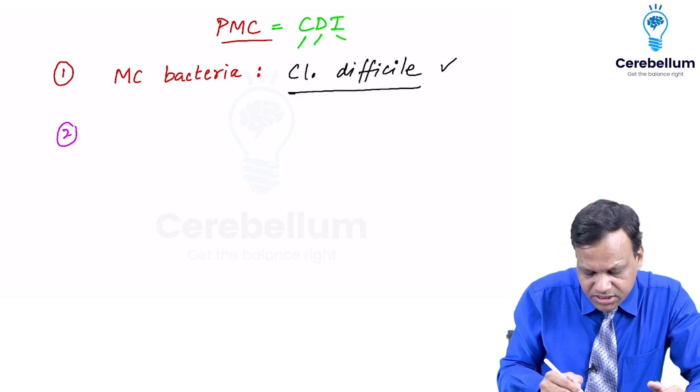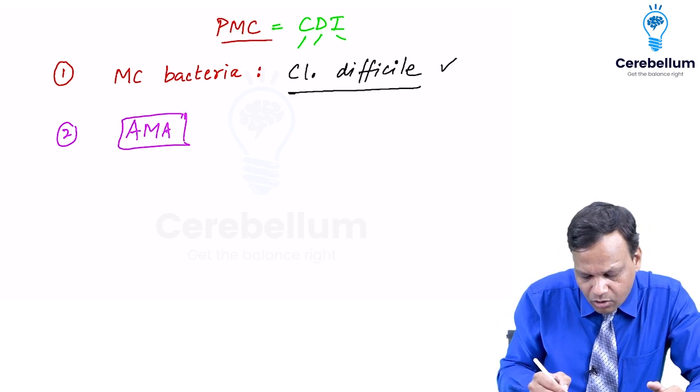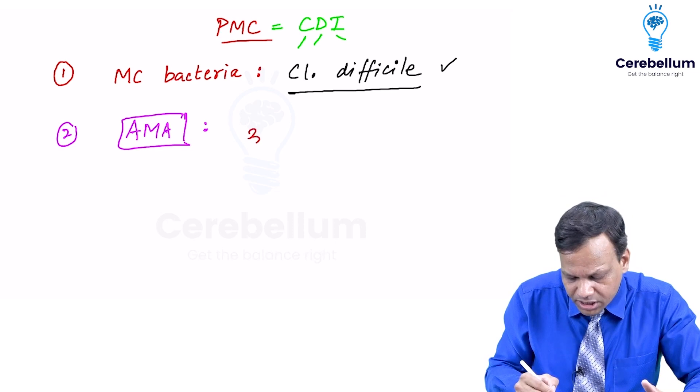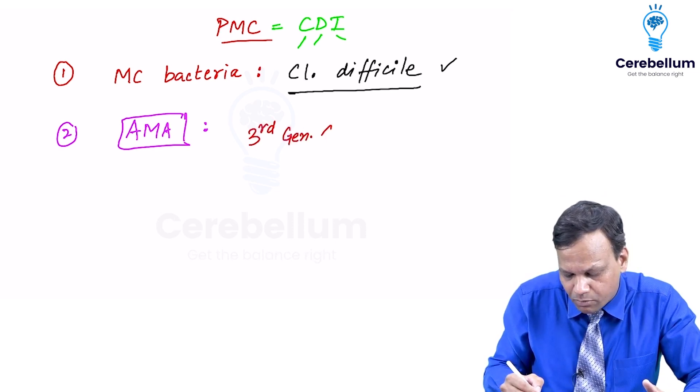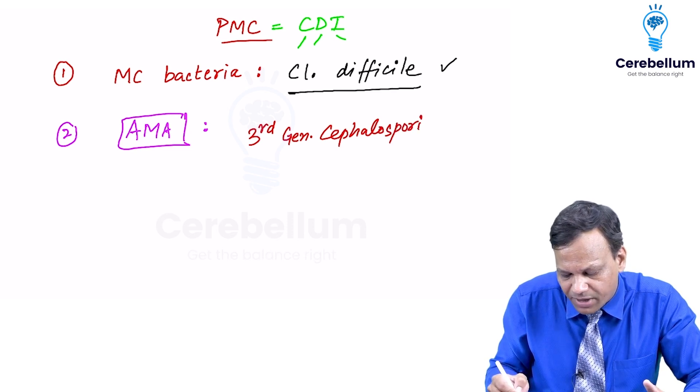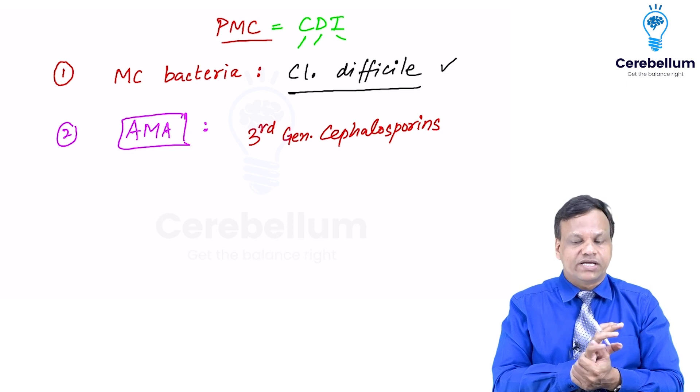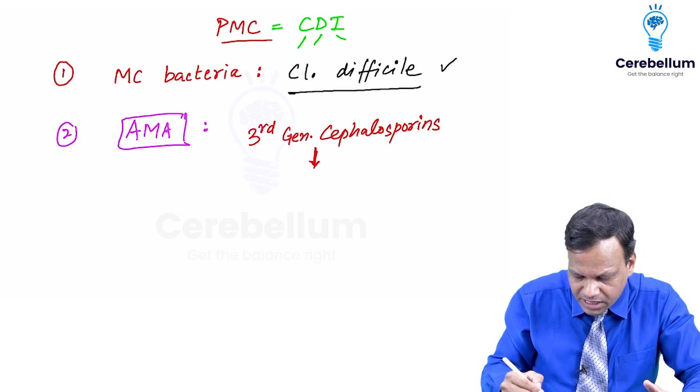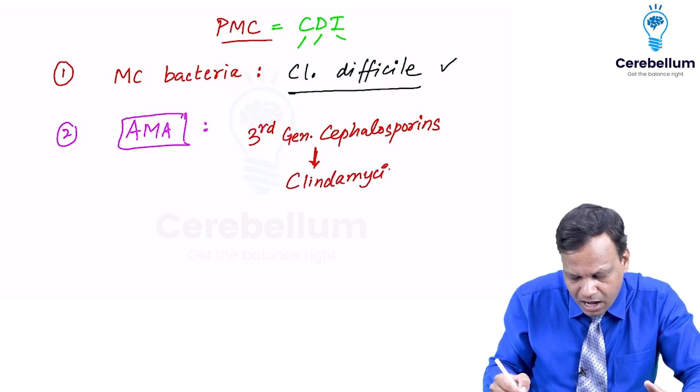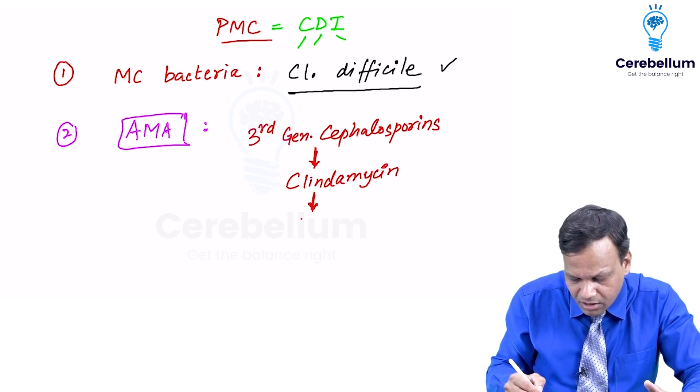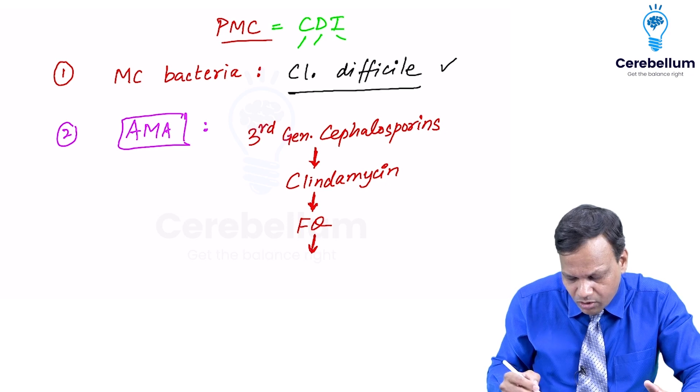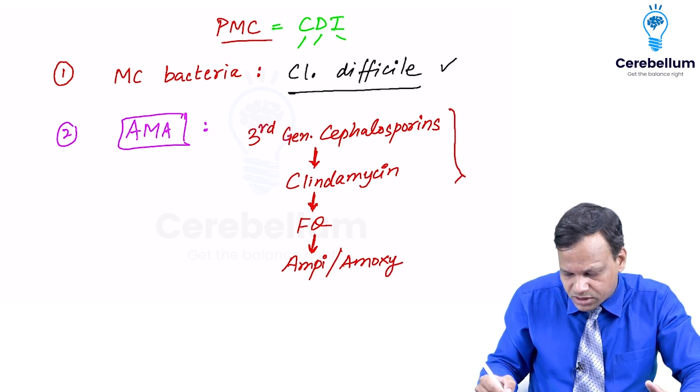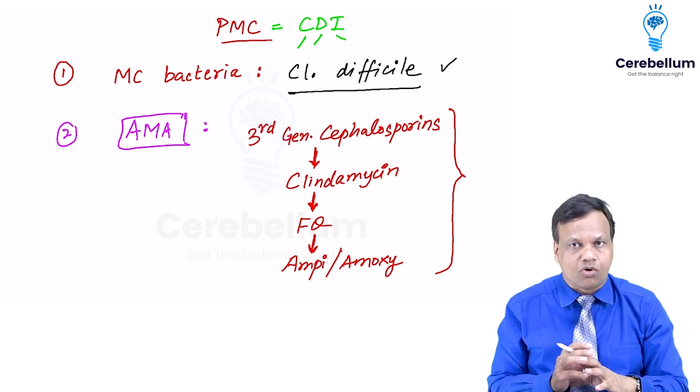Second question is which are the antibiotics or antimicrobials that cause pseudomembranous colitis commonly. Now in the sequence remember third generation cephalosporins are now the most common cause. Previously it was clindamycin but we have stopped using clindamycin that frequently. So now the most common cause has become third generation cephalosporins. The next drug which follows them is clindamycin. After clindamycin the next important causes are fluoroquinolones and lastly the important causes are amino penicillin like ampicillin and amoxicillin. So remember this sequence.